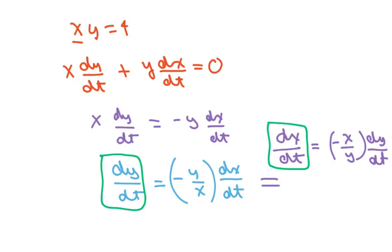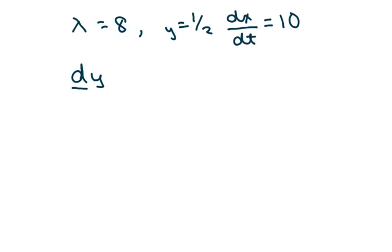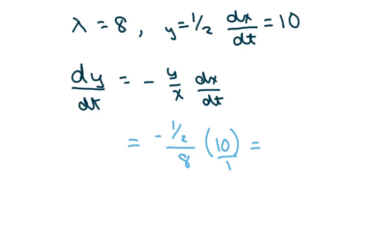So the first thing we need to do is find when x equals 8 and y equals 1 half. Well, we have derivative of x with respect to t equals 10. So we know that derivative of y with respect to t equals negative y over x times dx/dt. So we just plug everything in, we're going to get negative 1 half over 8 times 10. You can put that over 1 if you want, so it's going to be negative 5 over 8, because half of 10 is 5.